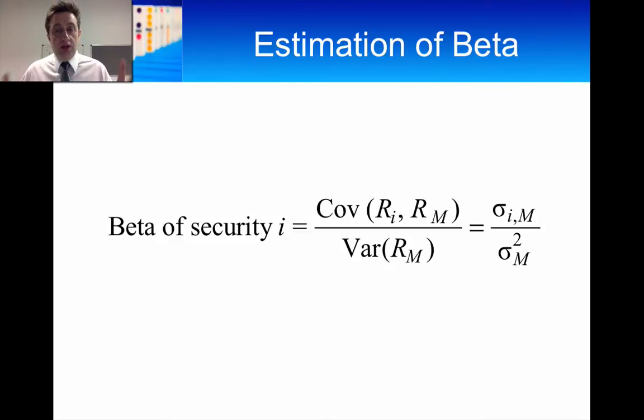So we already know the formula for the beta of an equity. It's the covariance between the returns on the equity and the returns on the market divided by the variance of the market. The best way to look at this is that this is the degree of co-movement.